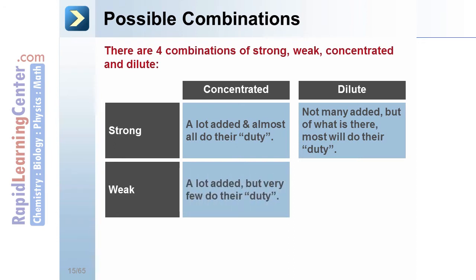Weak concentrated occurs when you add a lot of acid molecules, but very few of them dissociate. Weak dilute, only a few are added, and of those, only a very small percentage actually do the acid or base duty.